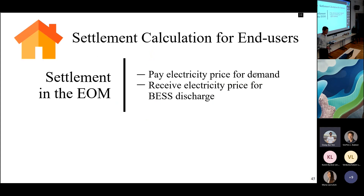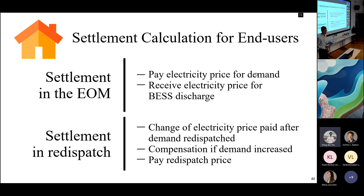To understand the incentives, I need to know how much price end-users pay and how it changes if they join the redispatch in TSO-DSO coordination. First there is the settlement of the energy-only market, where end-users pay the electricity price, and if they have batteries that discharged they might receive some revenue. For the redispatch, if their demand is redispatched then they don't need to pay the price, but they may receive some compensation for redispatch and also pay the redispatch price.